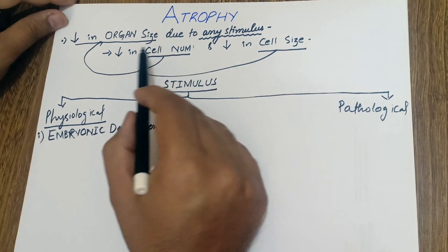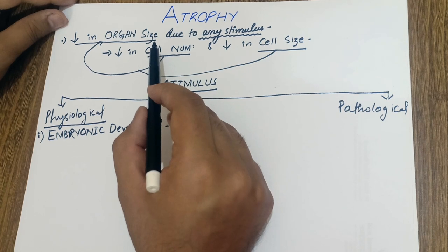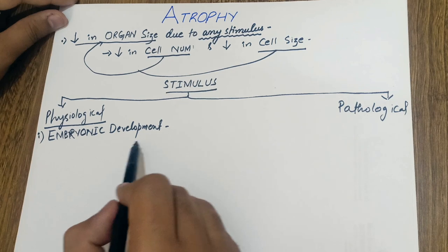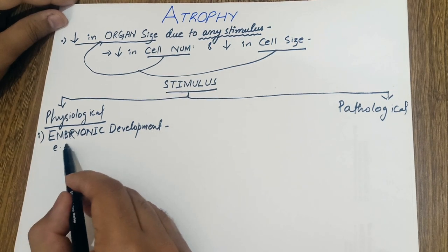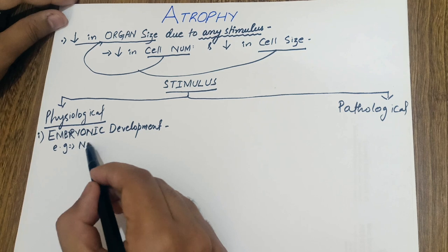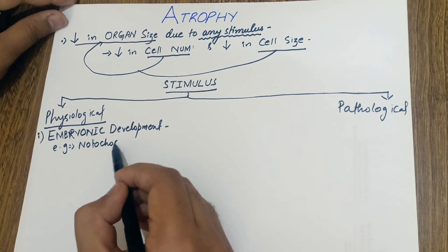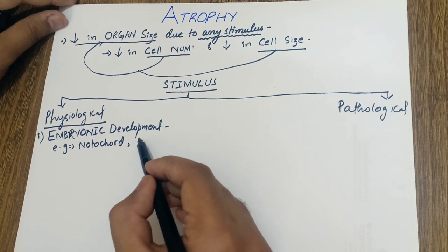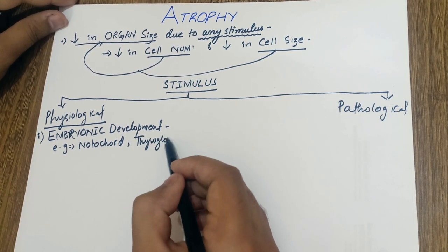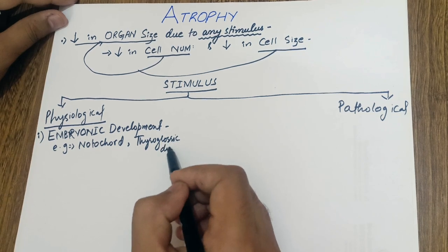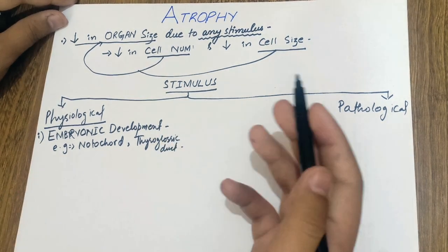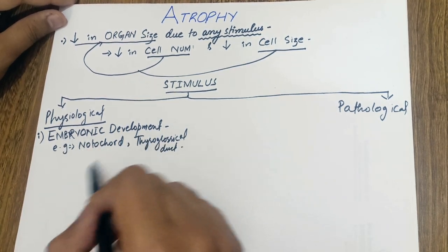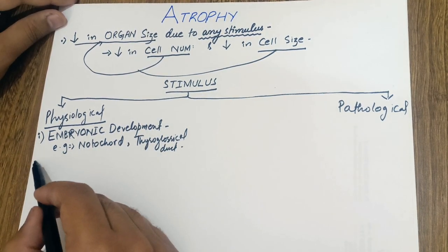Atrophy is the decrease in the size of the organ due to any stimulus. That stimulus can be embryonic development. For example, there are two organs such as the notochord and the thyroglossal duct. The size of the thyroglossal duct, which is in the tongue, is also decreased during embryonic development.